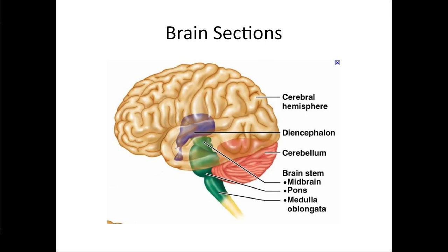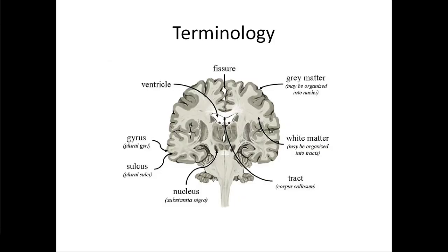Before we get into too much detail, I want to go over some general terminology. When we look at a cross-section of the brain, we're going to see areas of gray matter and areas of white matter.